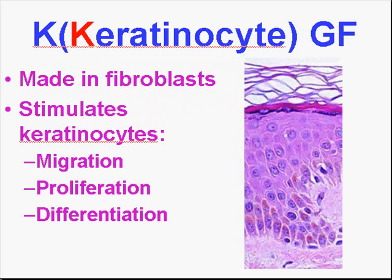Keratinocyte growth factor — no surprise — is another growth factor made by connective tissue cells and fibroblasts, and it stimulates keratinocytes to migrate, proliferate, and differentiate. So we constantly see these interrelationships between stromal or mesodermal-derived cells and epithelial or ecto- and entodermal-derived cells, which is pretty much what we knew from embryology.